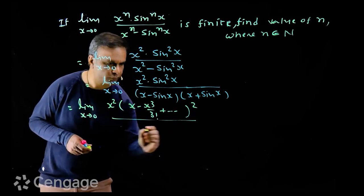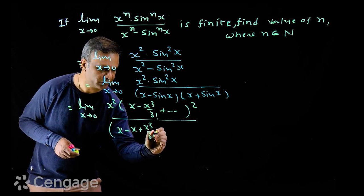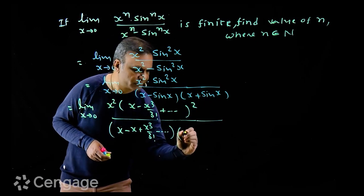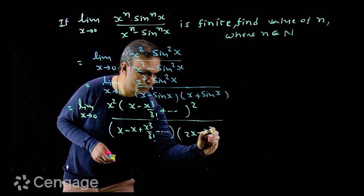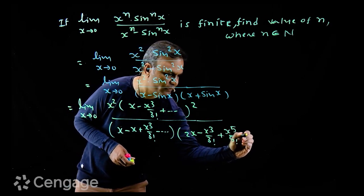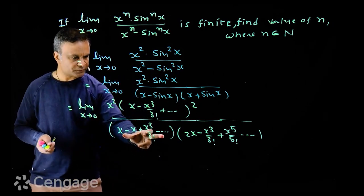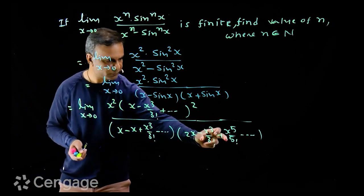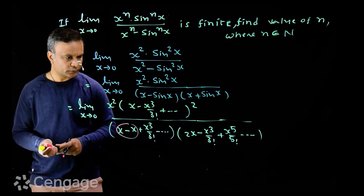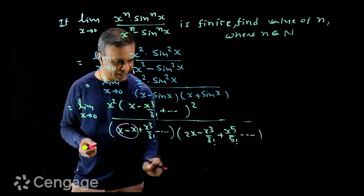The expansion of sin(x) is x minus x³/3! and so on. Substituting, the numerator becomes x² times (x minus x³/3! + …)². The factor (x minus sin x) becomes x³/3! minus x⁵/5! and so on. The factor (x plus sin x) becomes 2x minus x³/3! plus x⁵/5! and so on. We take out common factors from each bracket.